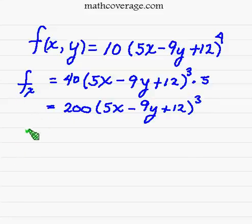Now we're asked to find the partial derivative with respect to y. So we take the derivative of this with respect to y, leaving x as a constant. Once again, we take the 4, bring it out front, and we have 40.